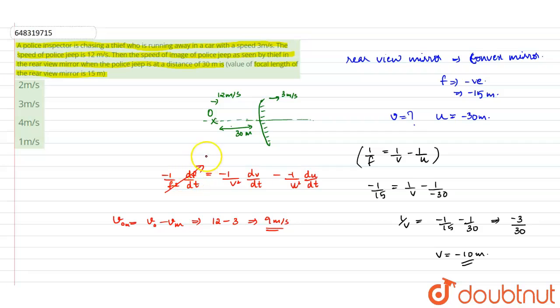This will be 0 because there is no velocity here. We are taking a relative velocity on this side. So 1/v² dv/dt - consider this also as relative velocity of the image.